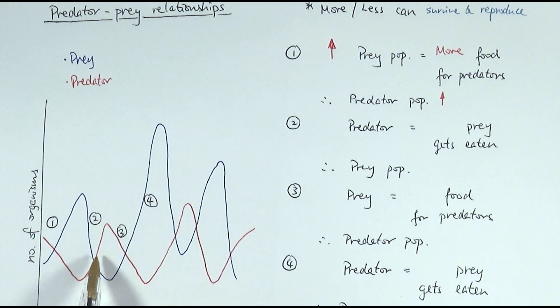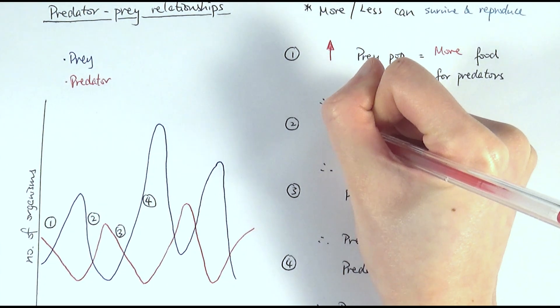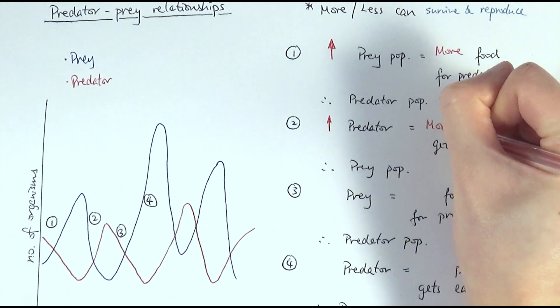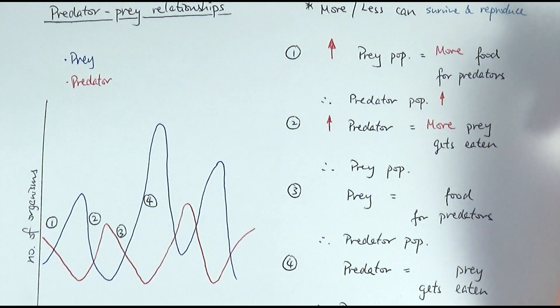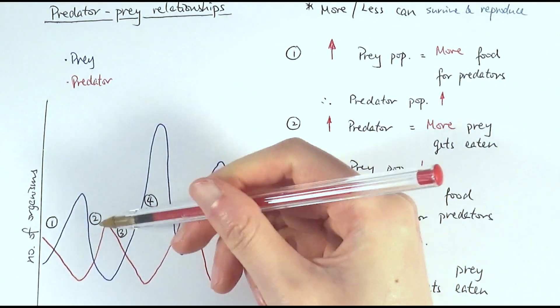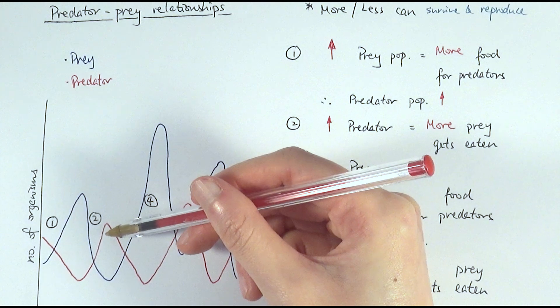And as the predator population increase, so that's kind of following up on the next point, stage two. So as the predator population increase, more prey would then be eaten, so therefore less prey can survive and reproduce, therefore the prey population would decrease. So as you can see in the graph, the prey population decreases as the predator population increase there.